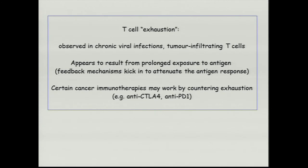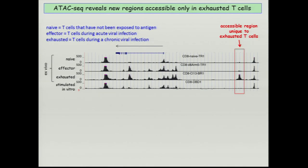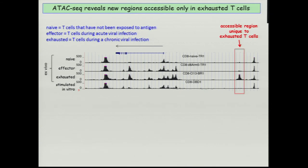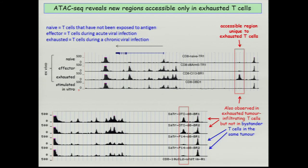I want to bring up the idea that one should also be looking at primary cells available in small numbers. To do that, we looked at a phenomenon called T-cell exhaustion, observed in chronic viral infections and in tumor-infiltrating cells, which appears to result from prolonged exposure to antigen and is important in the context of certain immune deficiencies. Looking at ATAC-seq data from naive, effector, and exhausted cells — from only about 50,000 cells — there are regions accessible in exhausted cells in vivo, in the chronic viral infection context, that do not appear when you stimulate T cells in vitro. The same peaks show up in tumor-infiltrating cells exposed to antigen, and don't show up in standard cells in the tumor.